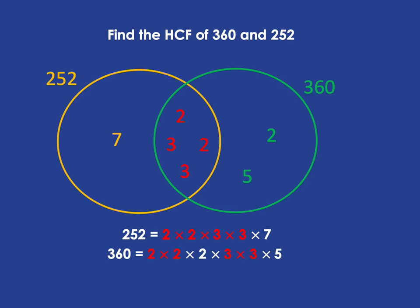We can't include 7, for example, because although 7 divides into 252 with no remainder, it doesn't divide into 360. So our highest common factor of 360 and 252 will be the stuff in the overlap, 2 times 2 times 3 times 3, and that is 36.